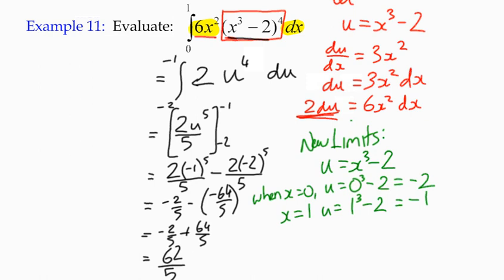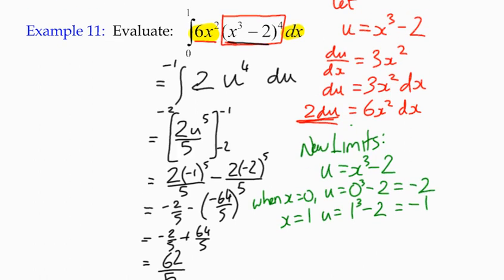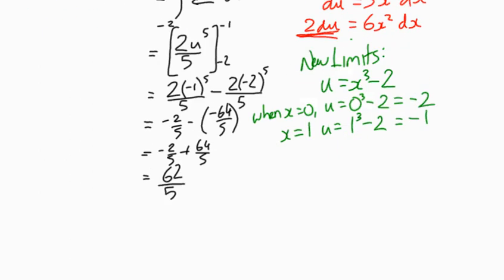Okay, so that was the integral of 6x squared multiplied by x cubed minus 2 to the power of 4 with respect to x from 0 to 1 has a value of 62 over 5.